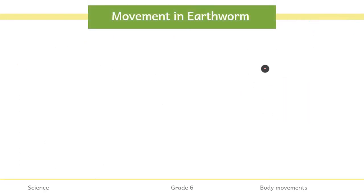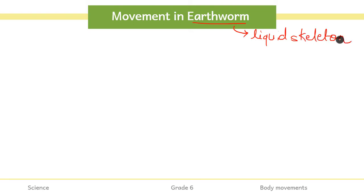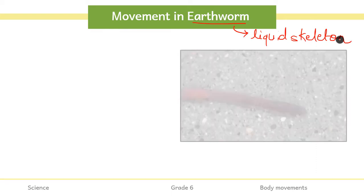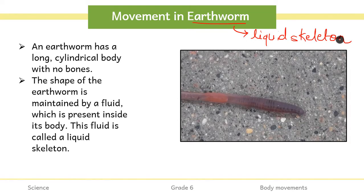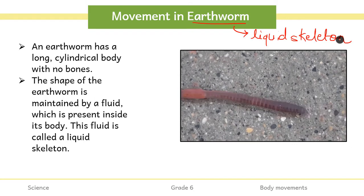Now we talk about movement in earthworm. Very importantly, earthworms do not have an outer skeleton and do not have a hard skeleton. Neither do they have an inner skeleton. Instead, they have what is known as a liquid skeleton. Remember this point: earthworm has a liquid skeleton because earthworms do not have legs or limbs. Inside their body, they have a liquid which helps in movement.